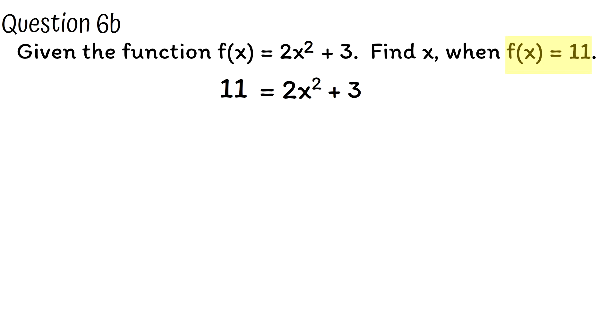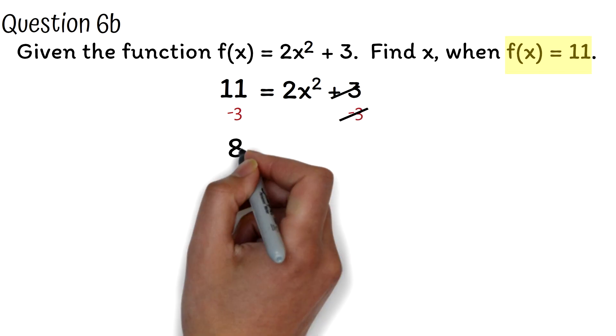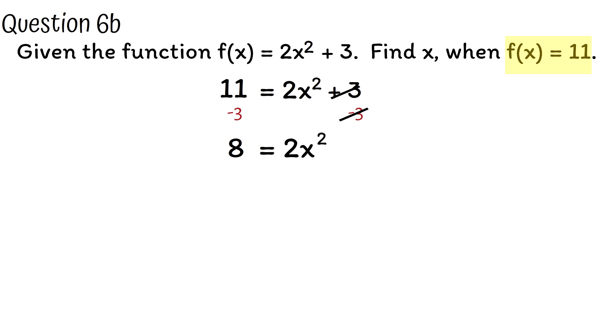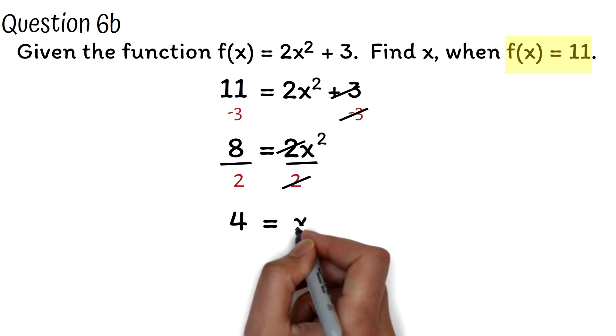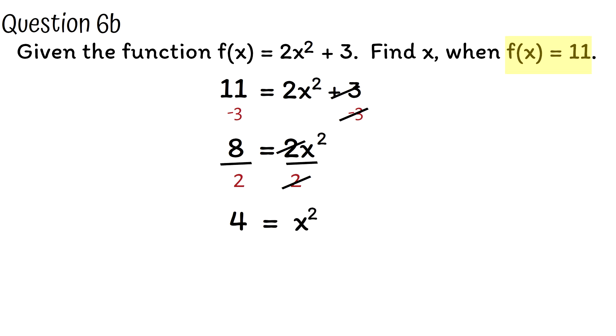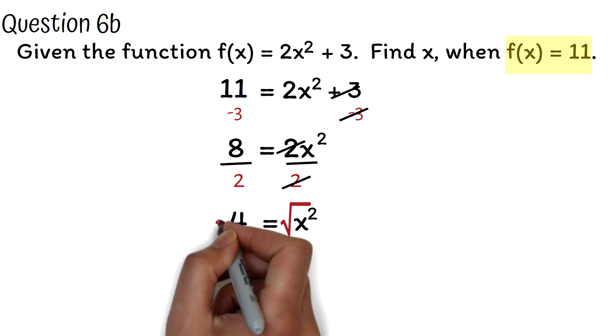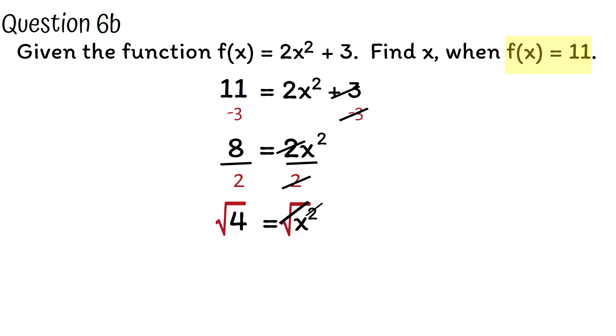Please, if you're not familiar with solving equations, check the links in the description and watch the video. It's extremely important you master how to solve equations. We want to get the x by itself. We will first subtract 3 from both sides. The 3 will cancel out. 11 minus 3 is 8. So we have 8 = 2x². Next, we will divide both sides by 2. The 2 will cancel out. 8 divided by 2 is 4. We have 4 = x². Finally, to get the x by itself, we will find the square root of both sides. The square root will cancel the squared.